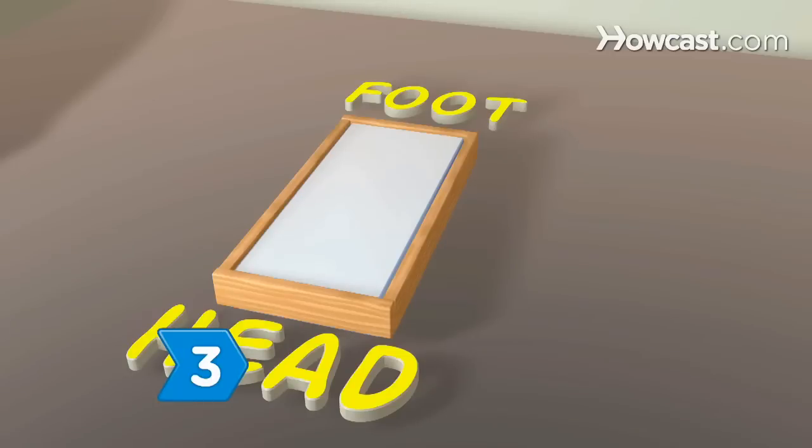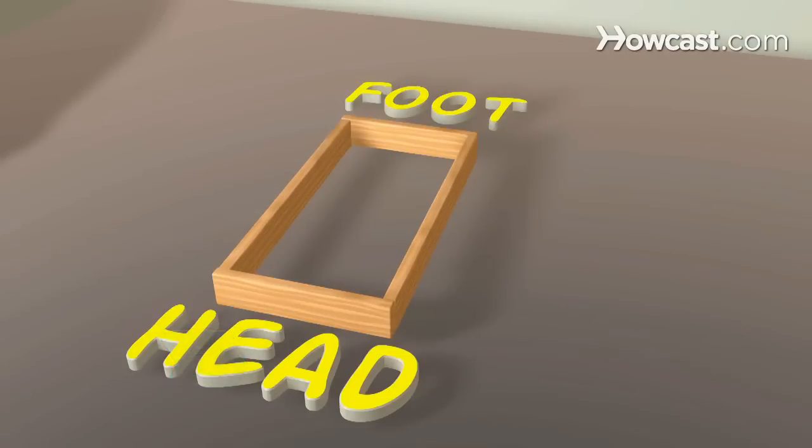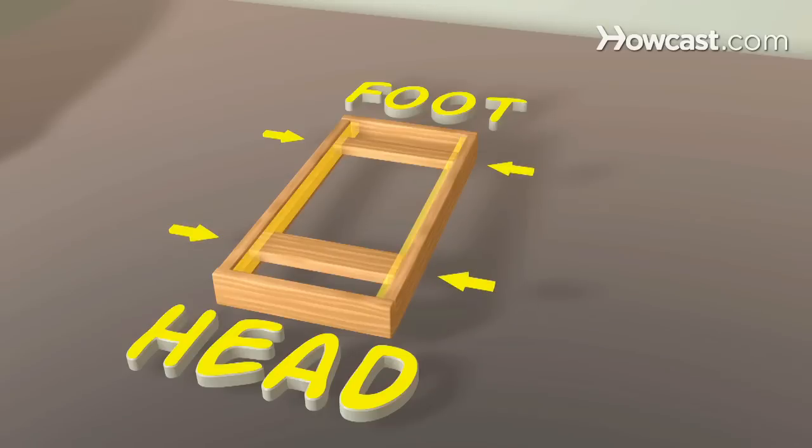Step 3. Assemble mattress supports inside the box using four plywood bits. Place one support 3 inches from the foot and one 3 inches from the head of the frame and fasten with screws. Install additional supports to the sides and in the middle.